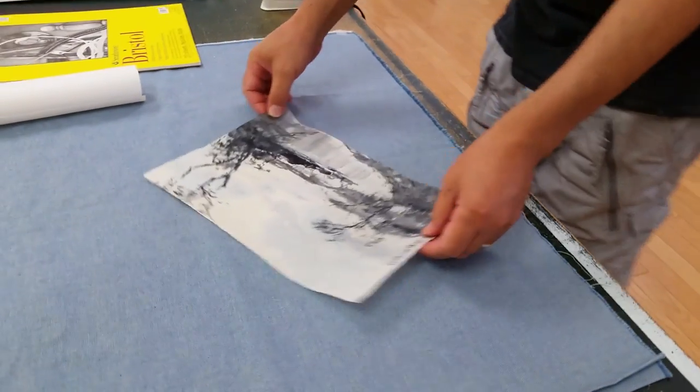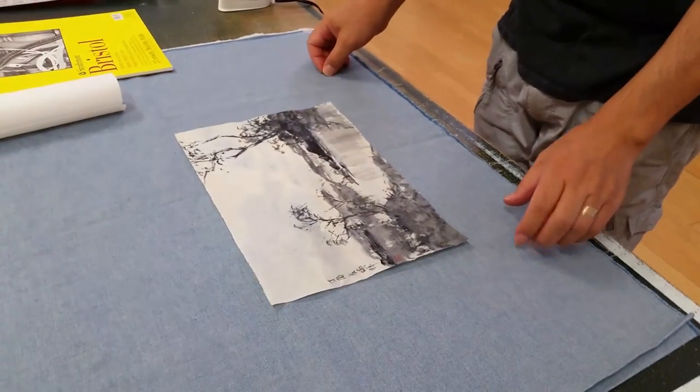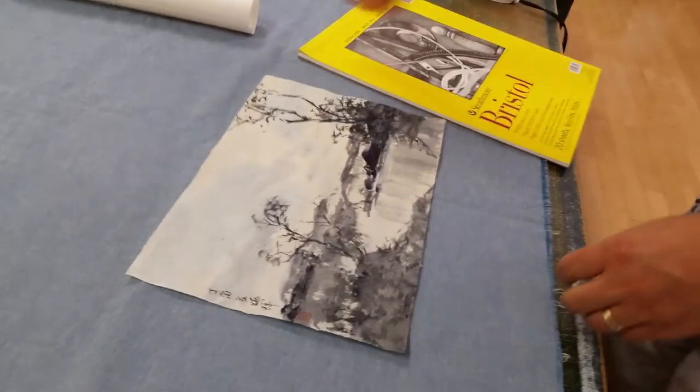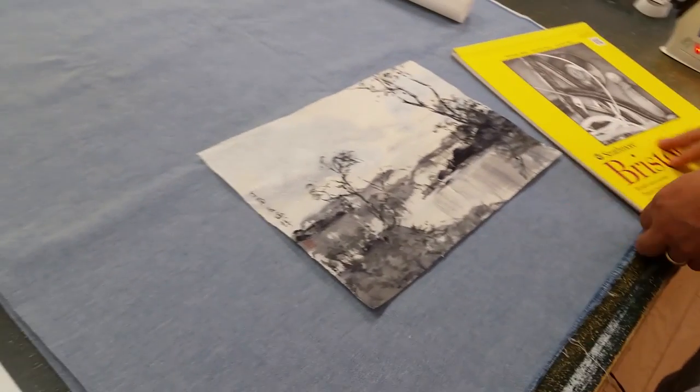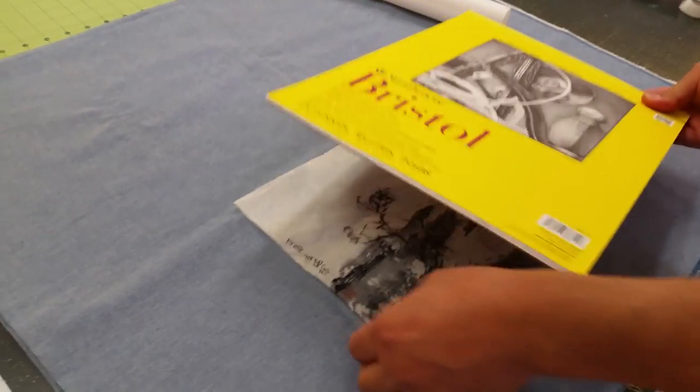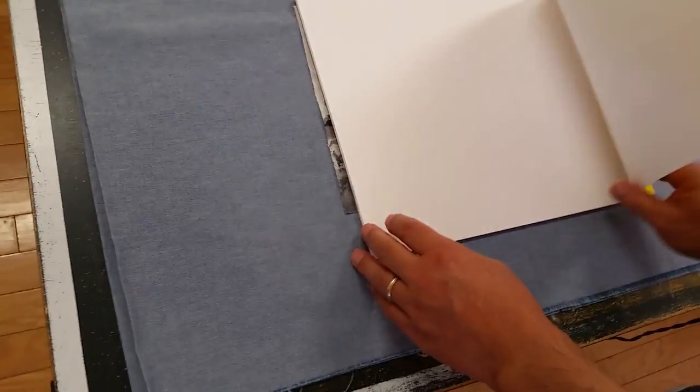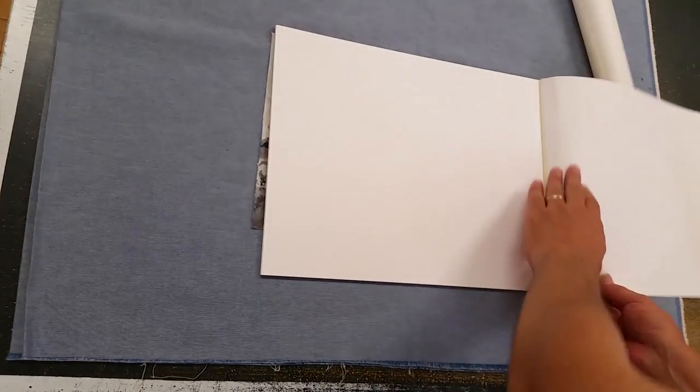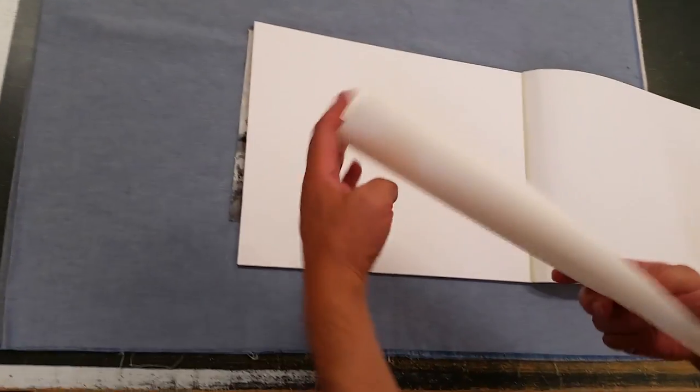Before we do the framing, we need to mount it to make it look more like a regular watercolor. So I use a backing paper. You can use watercolor painting paper, Bristol paper, or multimedia paper.